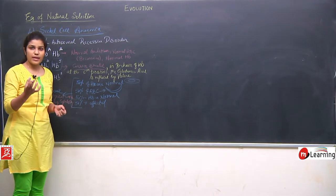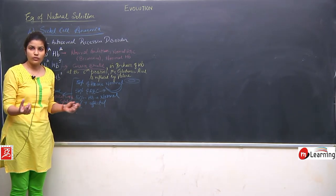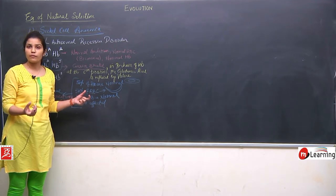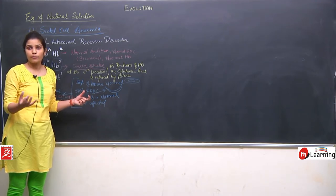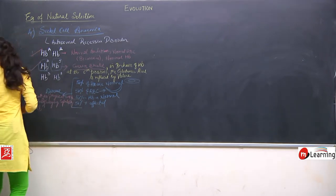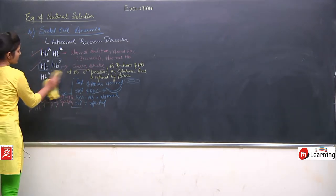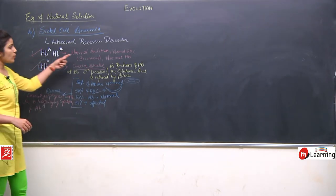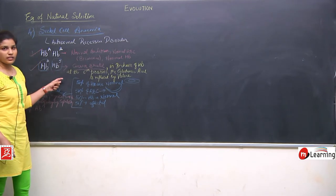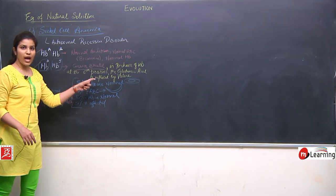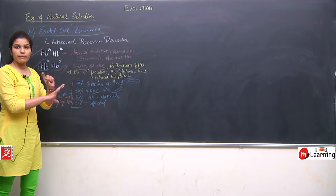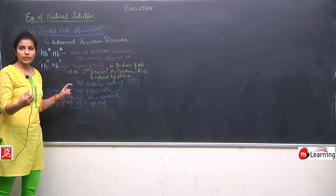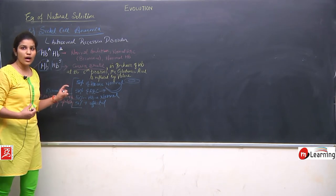The hemoglobin's oxygen carrying capacity is reduced. Therefore, these organisms cannot perform their physical work properly. To summarize: the normal condition has everything normal; the carrier condition has 50% of RBCs affected and 50% normal, with 50% of hemoglobin also affected.